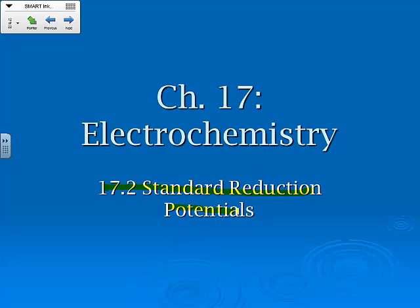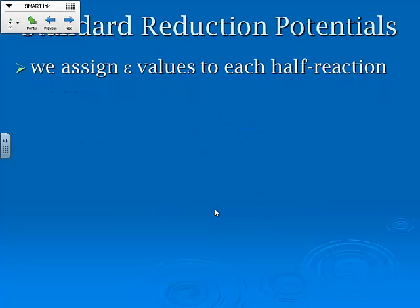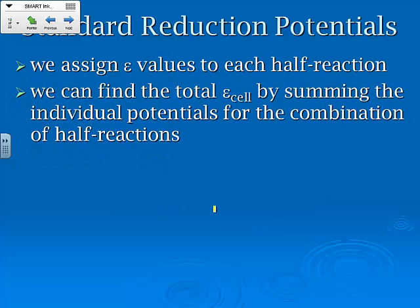Now we're going to talk about standard reduction potentials. This is that list that's on the back of the AP Chem periodic table. We assign these values to each half reaction, and we can find the total potential for the cell by summing up the individual potentials for the combination of half reactions.